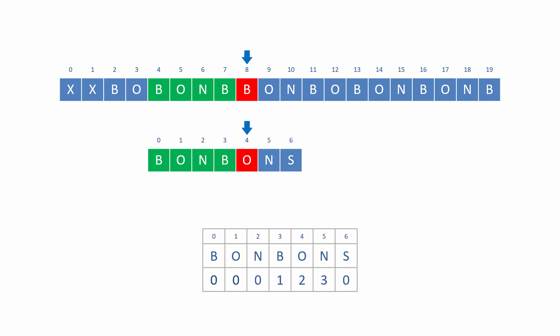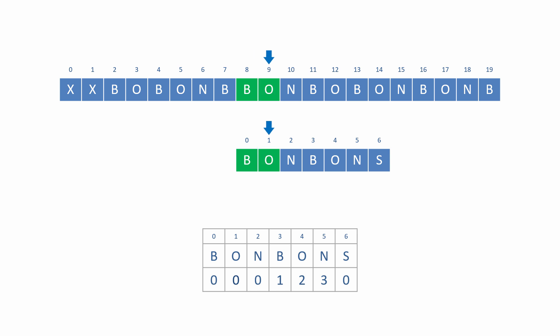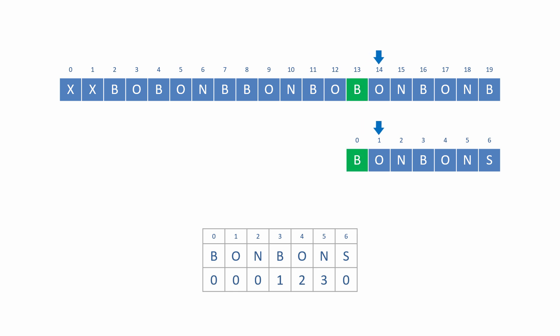Another partial match occurs up to and including index position three of the pattern. According to the table, index position three has an LPS value of one, so the search should resume at index position one of the pattern. A partial match up to and including index zero of the pattern requires that the pattern pointer be reset to zero. The search continues. A partial match of five letters ending at position four has an LPS value of two, so the pattern pointer should be set to position two this time. Whenever there's a partial match, the table is consulted, minimising the amount of checking that needs to be done.